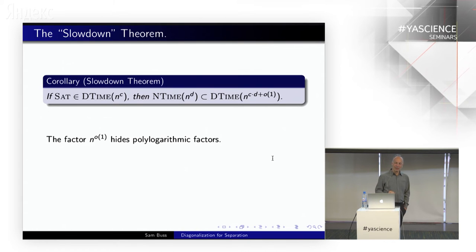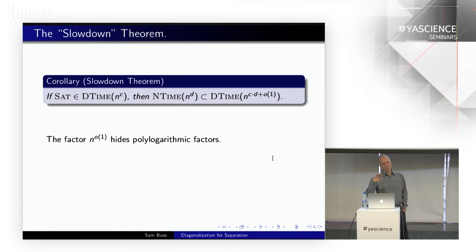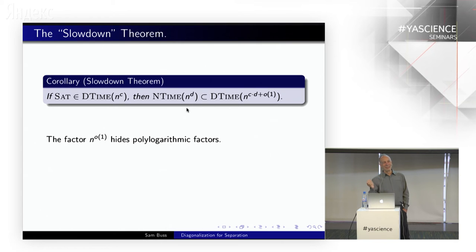The slowdown theorem summarizes this: if satisfiability is in deterministic time n^c, then NTIME(n^d) is in deterministic time n^{c·d + o(1)}. The proof: NTIME(n^d) can be converted to a SAT instance of size about n^{d+o(1)}, and if SAT is in deterministic time n^c, that instance can be solved in time about n^{c·d}. The slowdown theorem is one of the important ingredients for alternation trading proofs.